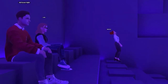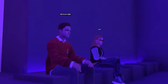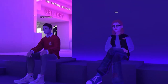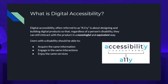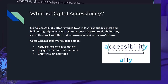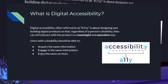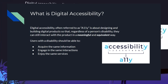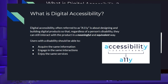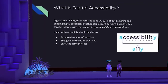What is digital accessibility? A11Y — sometimes pronounced 'ally' — is about designing and building products so that regardless of a person's abilities, they can still engage in a meaningful and equivalent way. Those are really key terms: meaningful and equivalent. Users should never have a simplified or watered-down version of content because of a disability. They should always be able to acquire the same information, engage in the same interactions, and enjoy the same services as folks without disabilities.